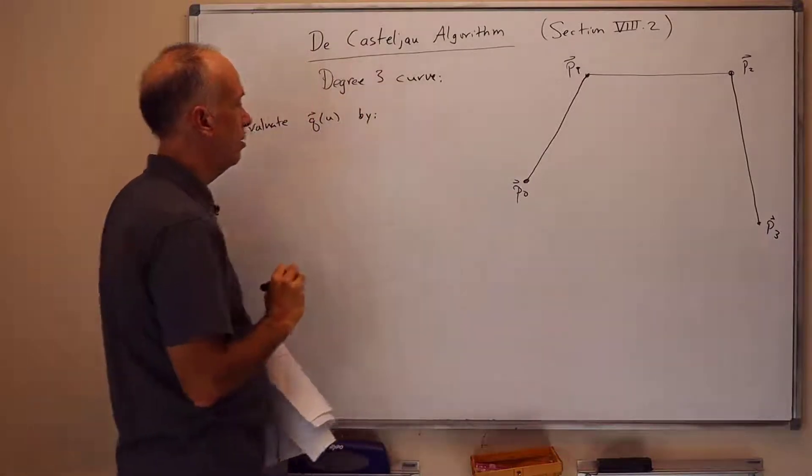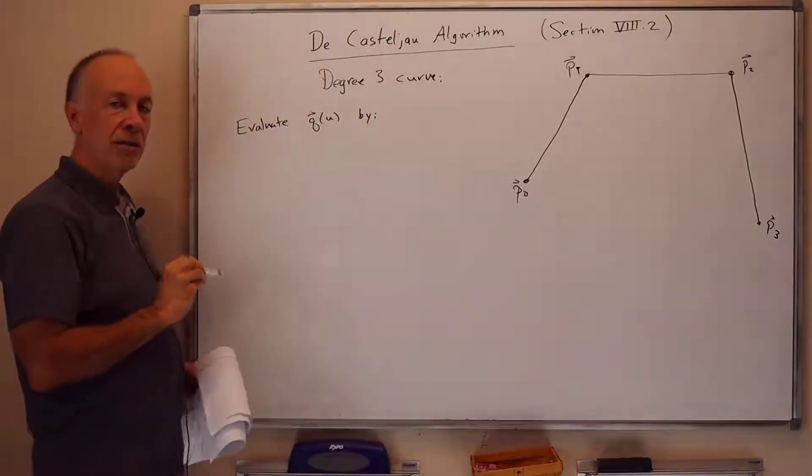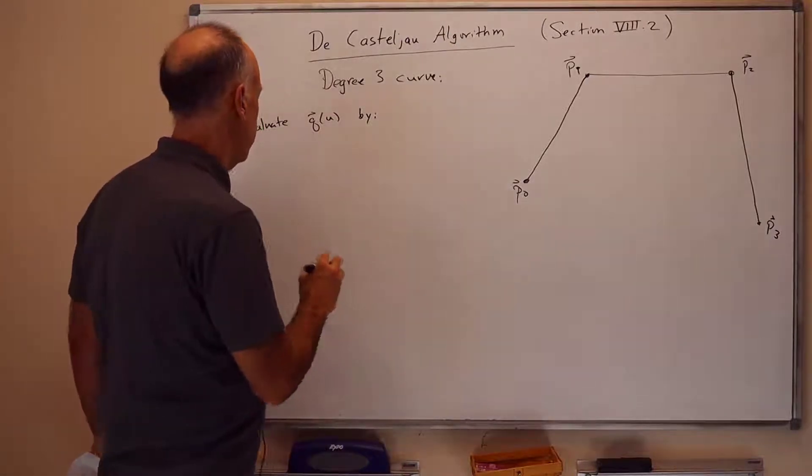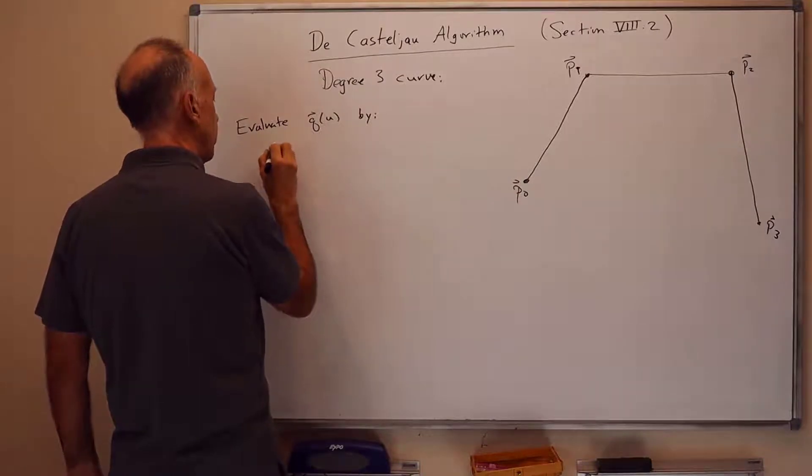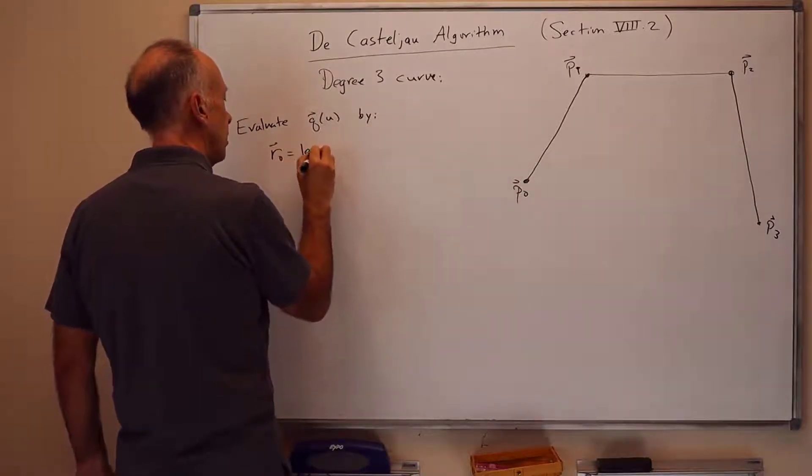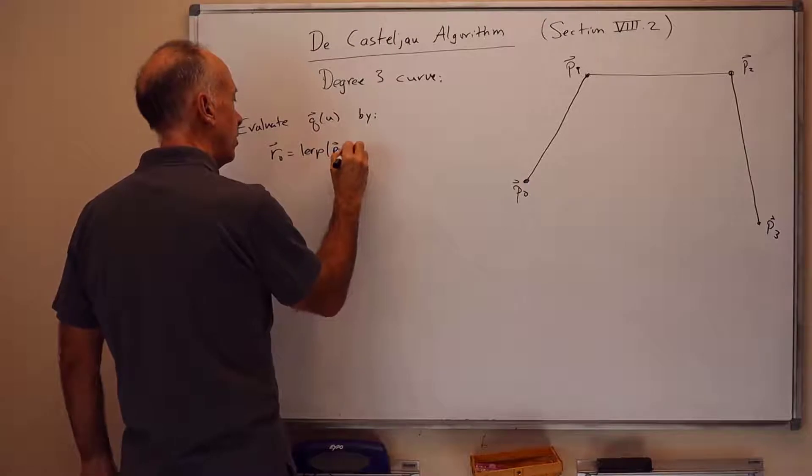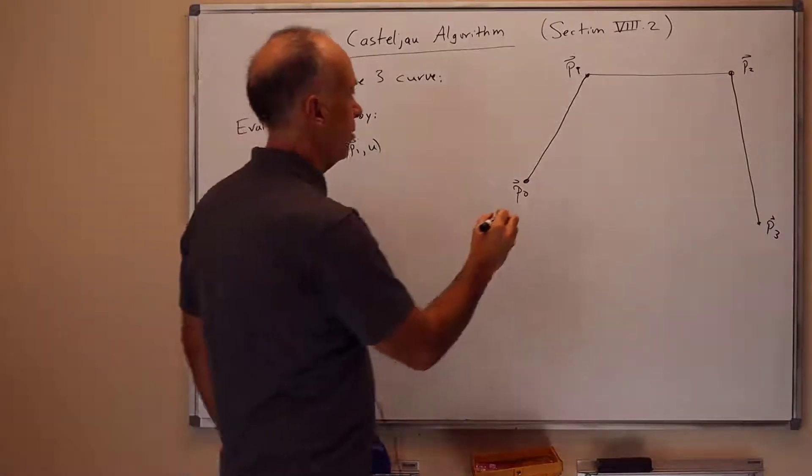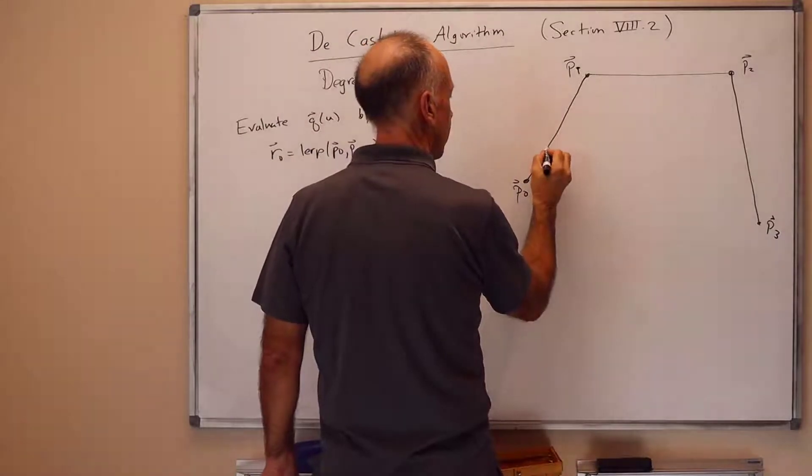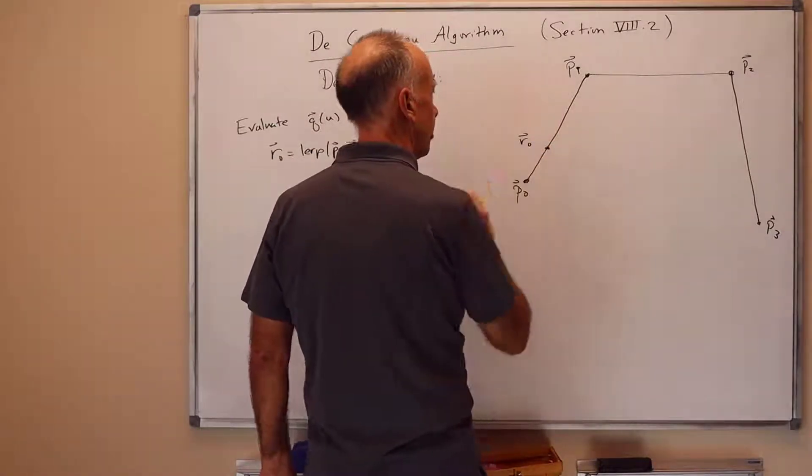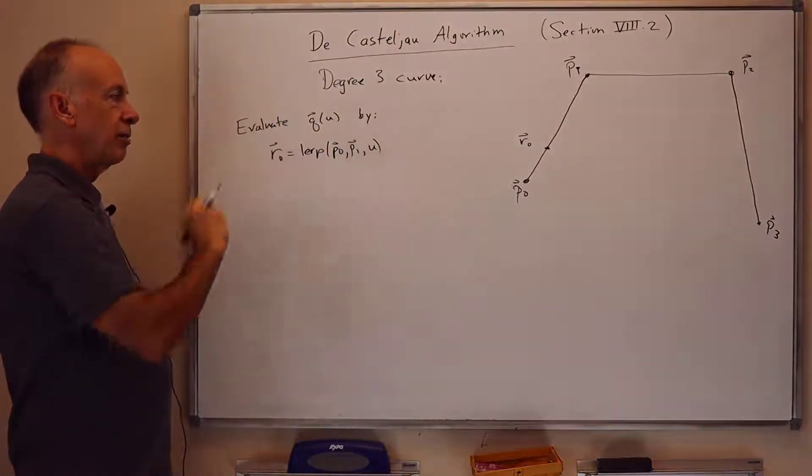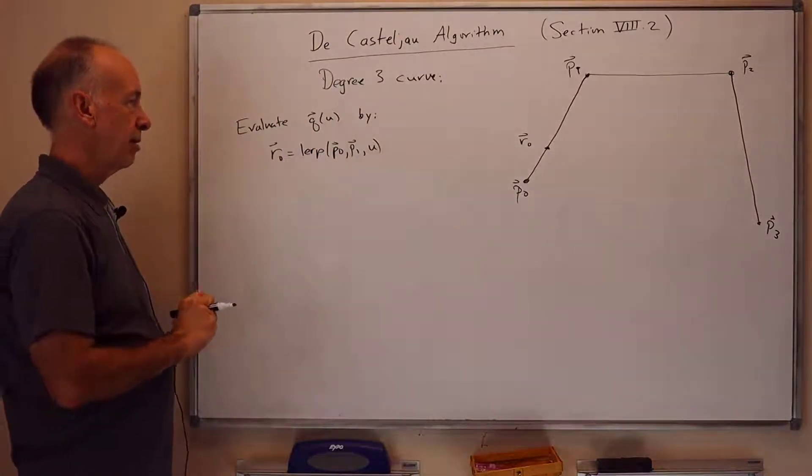So we're going to iteratively do lerps. We're going to start off with forming R0, you lerp from P0 to P1 by fraction U. So there's some distance U here. I'm drawing the picture as if U was about equal to one-third. We're going fraction U of the way from P0 to P1, and that's R0.